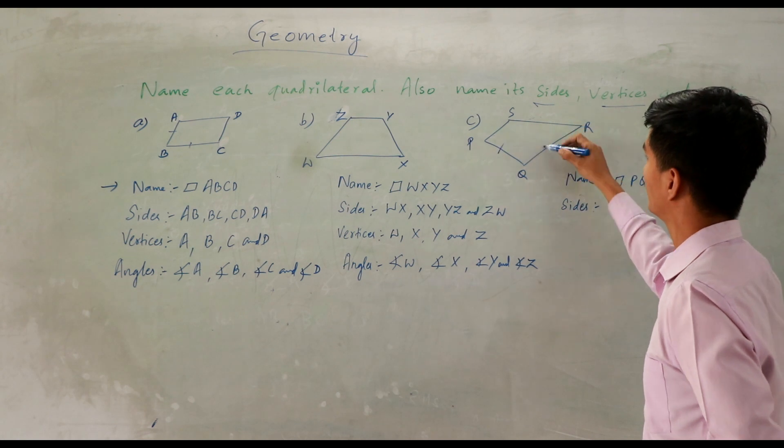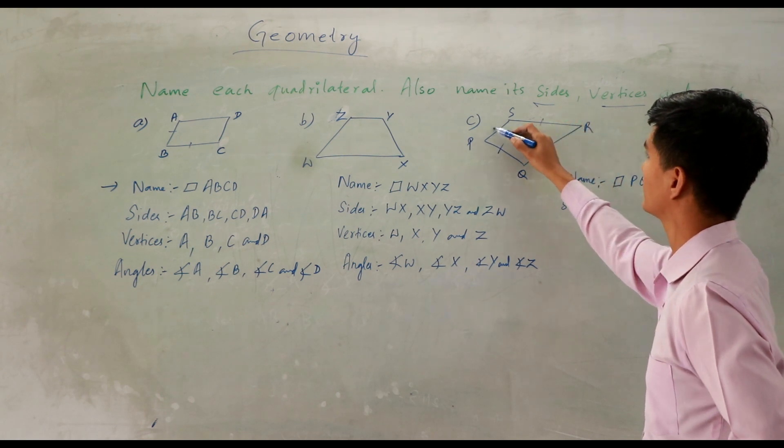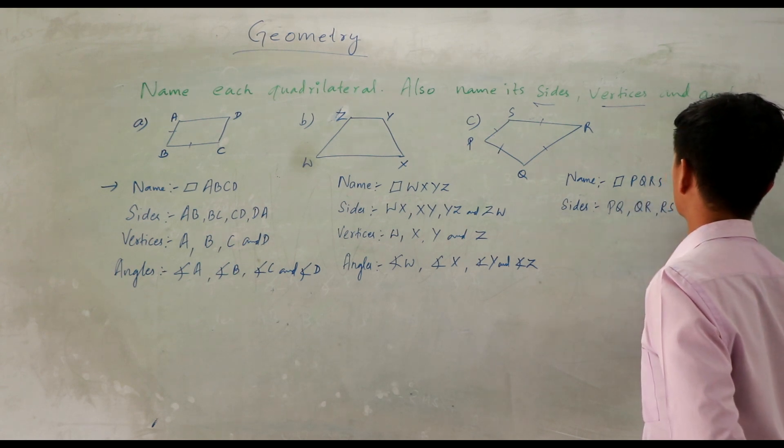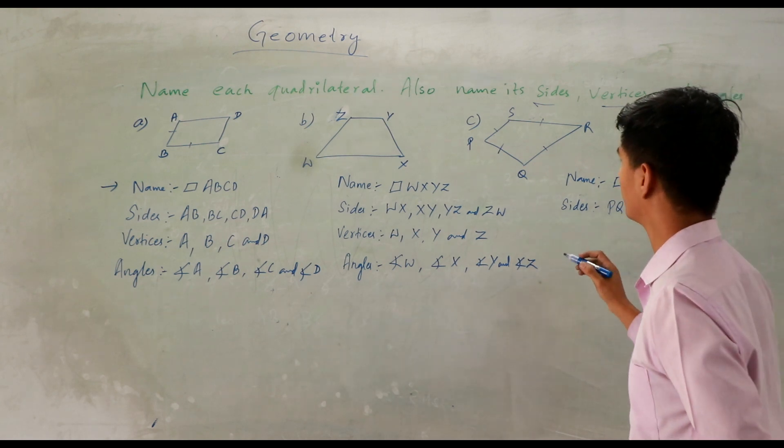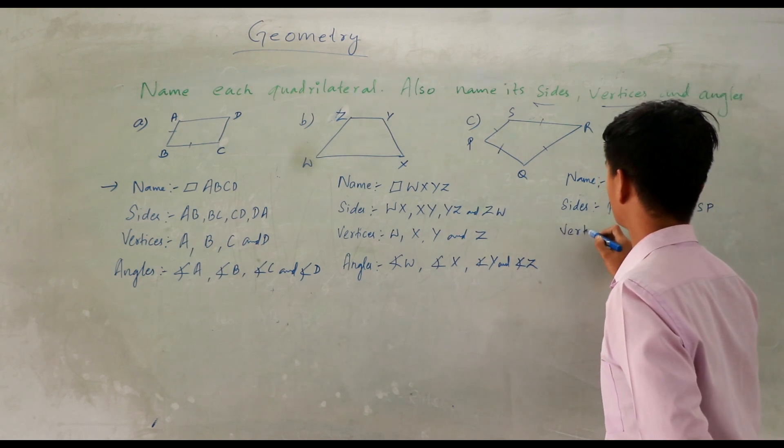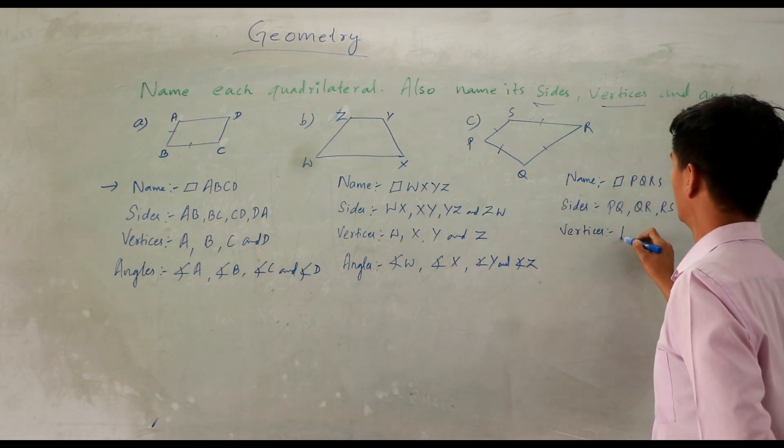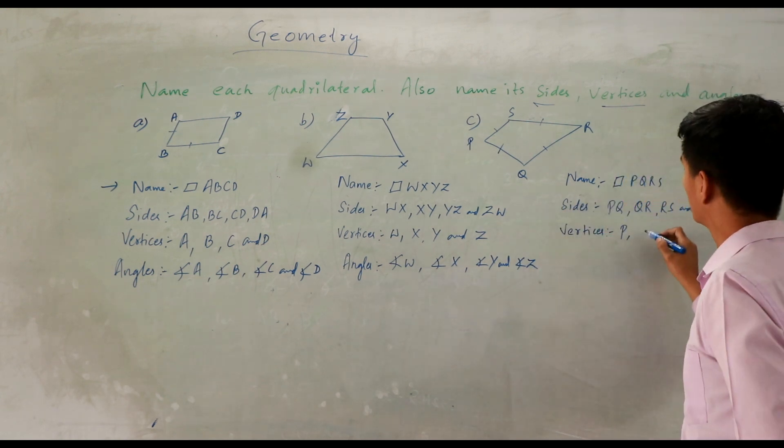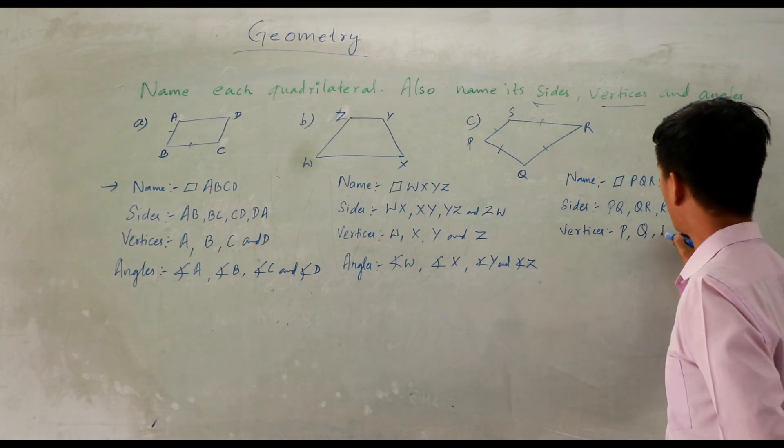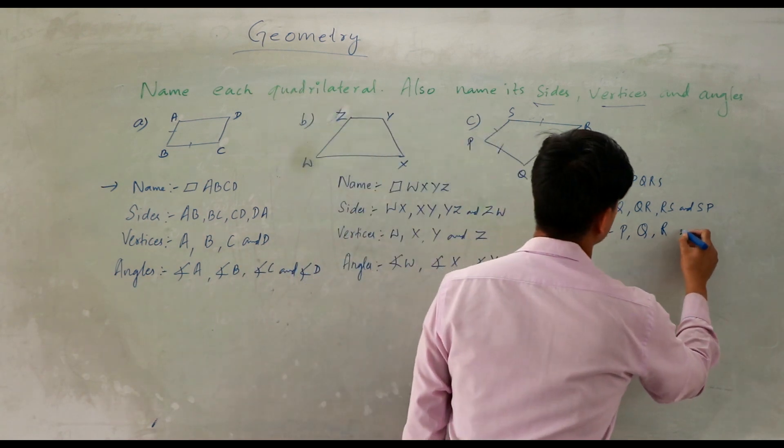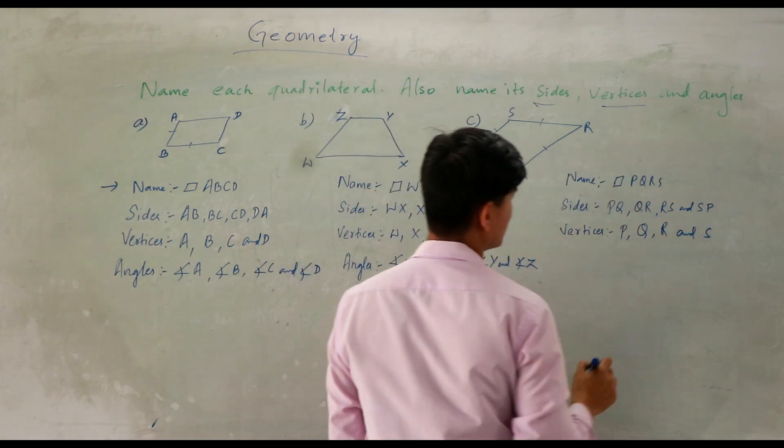So we have four sides, four vertices, and four angles. Like this you can write for B also, C also. Next quadrilateral, same way. So side you can write here WX, XY, YZ, and ZW. Vertices: W, X, Y, and Z.